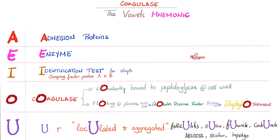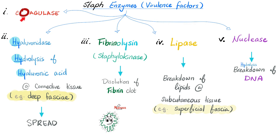Let's review the enzymes. Coagulase: because it coagulates. Hyaluronidase: it causes hydrolysis of hyaluronic acid, which is part of connective tissue — this is how Staph aureus can dig deeper into the deep fascia, especially in cases of carbuncles, causing bacteremia. Fibrinolysin: lysis of fibrin, also known as staphylokinase — not to be confused with streptokinase, which belongs to strept, not staph. Lipase breaks down lipid. Nuclease breaks down the nucleus.